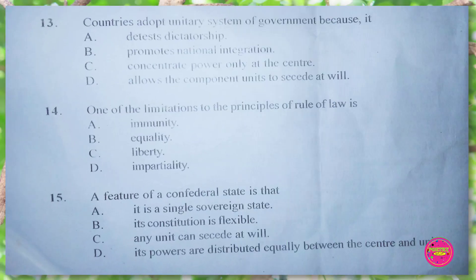Question 13. Countries adopt a neutral system of government because it: A. detests dictatorship, B. promotes national integration, C. concentrates power only at the center, D. allows the component unit to secede at will. The correct answer is B. promotes national integration.